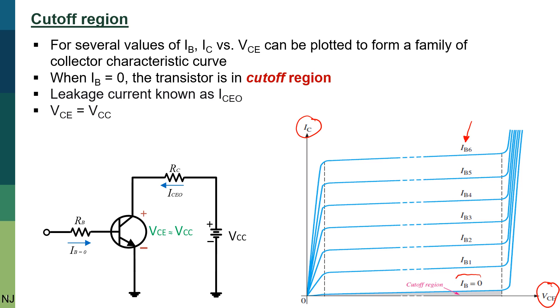Now when IB equals zero, the transistor is actually in cutoff region. This is cutoff region and it is very, very small. Looking at the circuit here, the base current IB is zero as the base region is open. Actually there will be a very small collector leakage current known as ICEO, but this leakage current can be neglected in circuit analysis because it is extremely small. So we can say that VCE equals VCC.